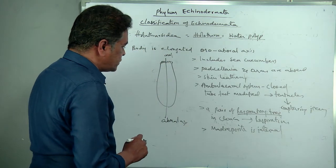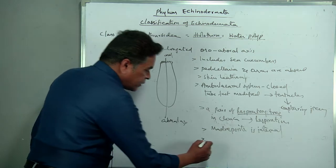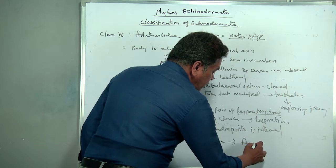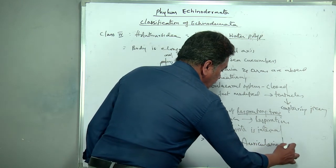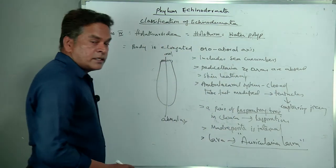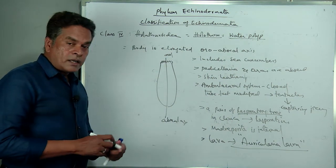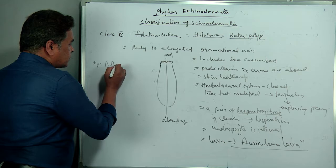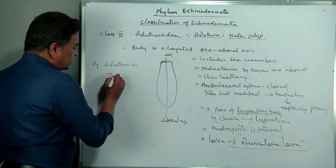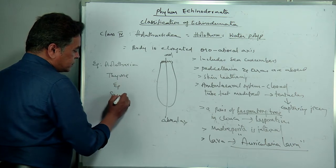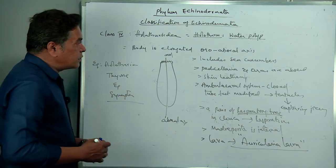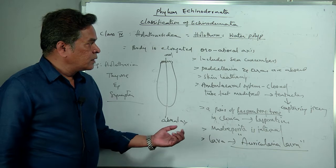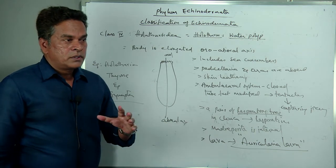Development includes a larva — the larva of Holothuroidea is auricularia larva. Examples: Holothuria (sea cucumber), Thyone, and Synapta. These are the three examples under Holothuroidea. Hope you have understood Echinodermata, both characters and classification. As far as exams are concerned, go through the NCERT lines, where little information is given on Echinodermata, and refer to the state syllabus for extra information.